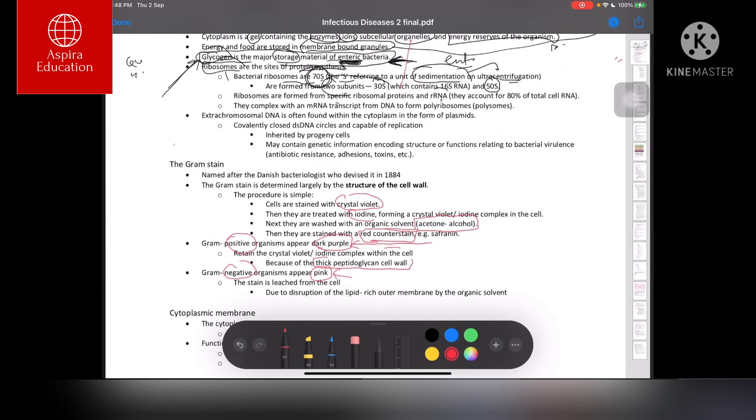This gram-positive is purple because of the thick peptidoglycan cell wall. This is the huge difference—the structure is different, the absorbing layer is different. As far as gram-negative bacteria are concerned, the stain gets leached out and turns pink.